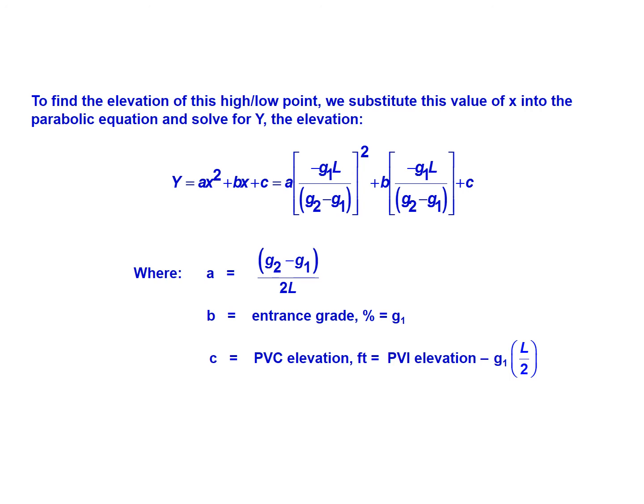And again, A is G2 minus G1 over 2 times L. B is the entrance grade in percent, G1. And C is the PVC elevation in feet, which is equal to the PVI elevation minus G1 times L over 2.